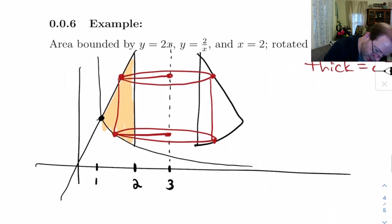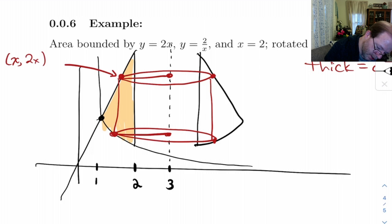Let's see. This point here, its x-coordinate is x, and its y-coordinate is 2x. This point here, its x-coordinate is x, and its y-coordinate is 2 over x. And this point here, its x-coordinate is 3, and its y-coordinate is 2 over x. Because it's the same y-coordinate as this point here.